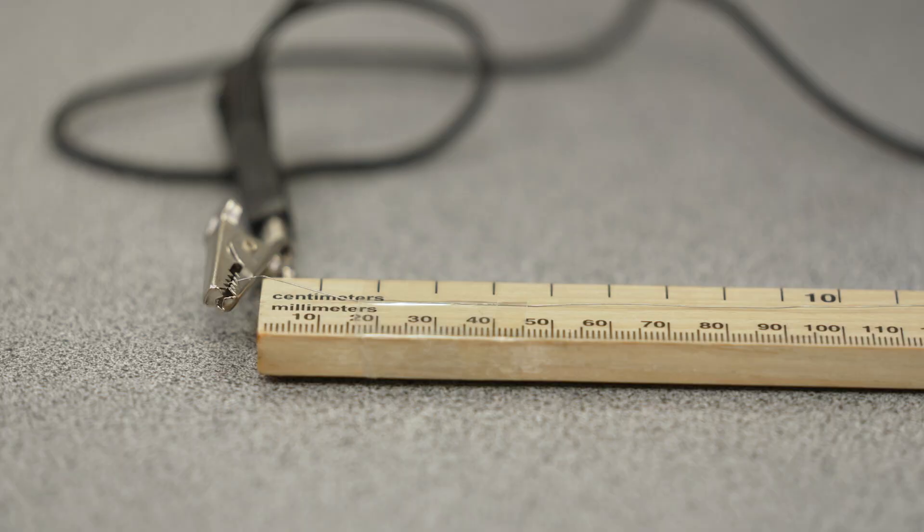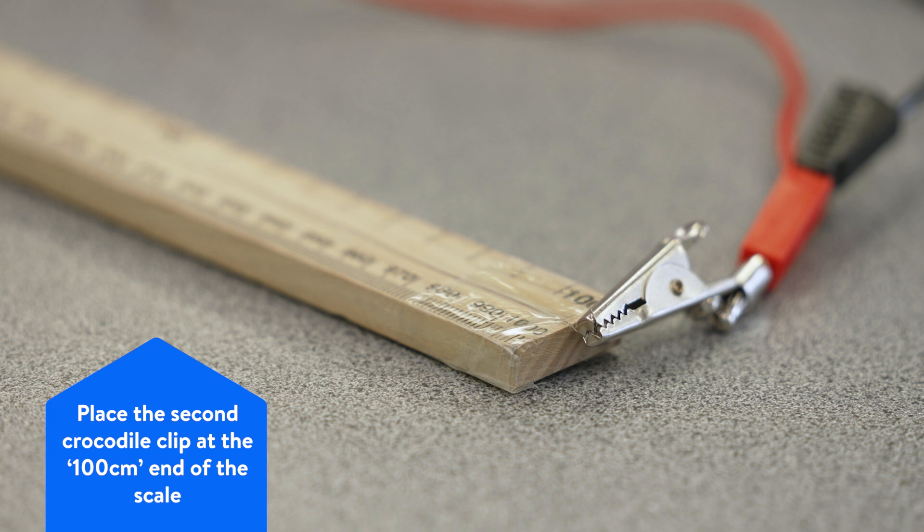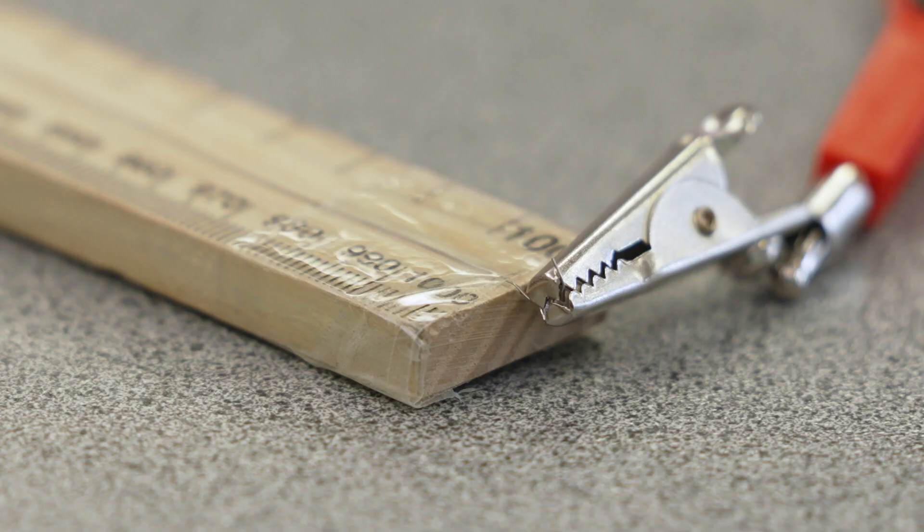Place two crocodile clips on the length of wire, one at the zero end of the ruler and this will stay in the same place throughout the experiment. Place the second crocodile clip at the 100cm end of the ruler; this will be the traveling crocodile clip.